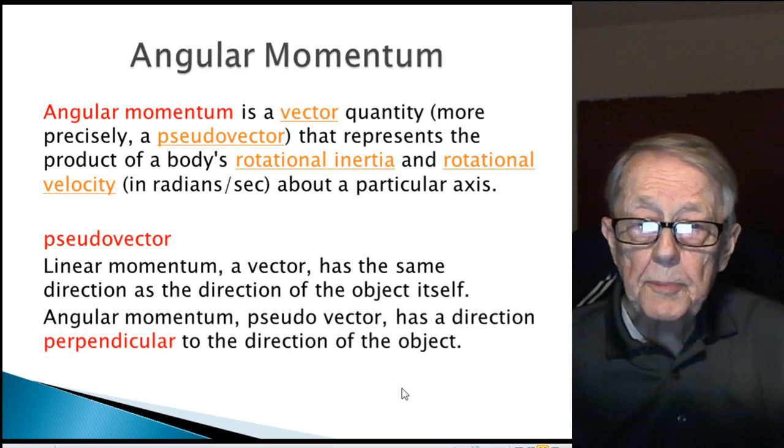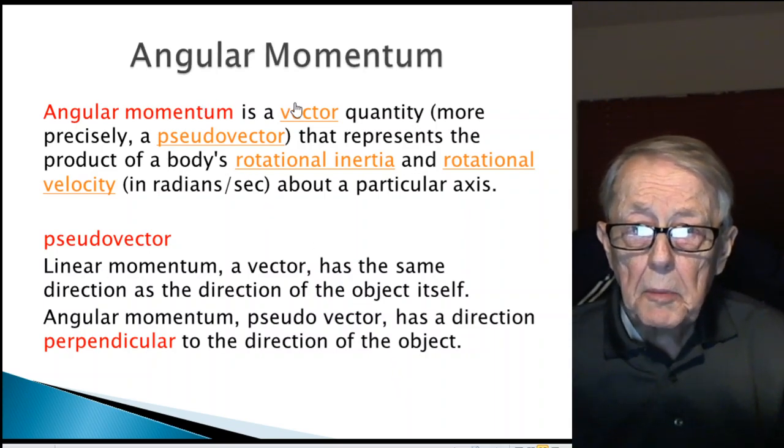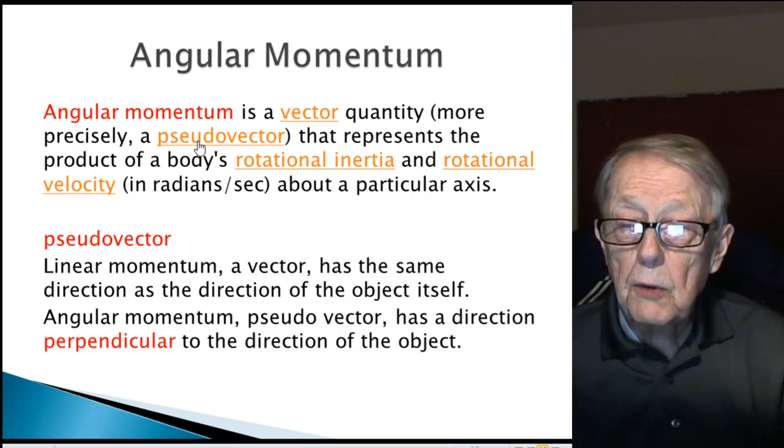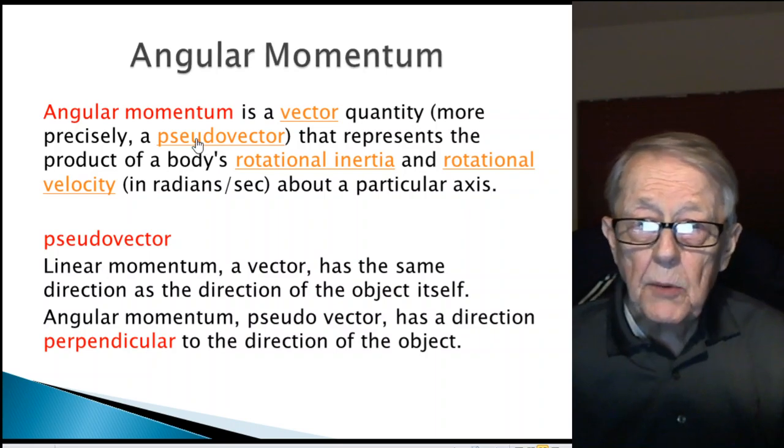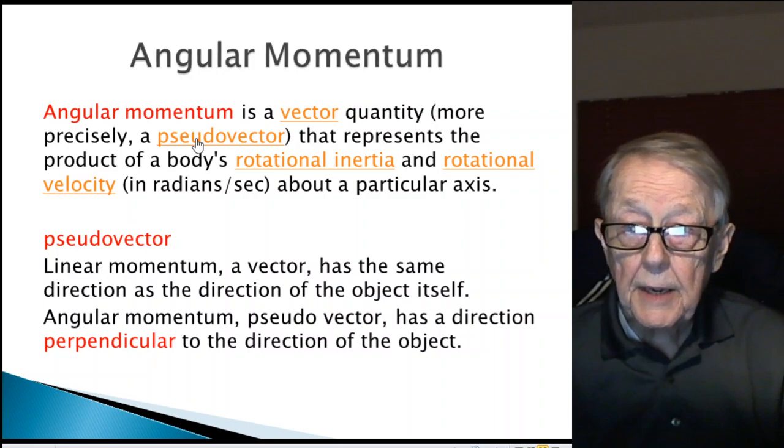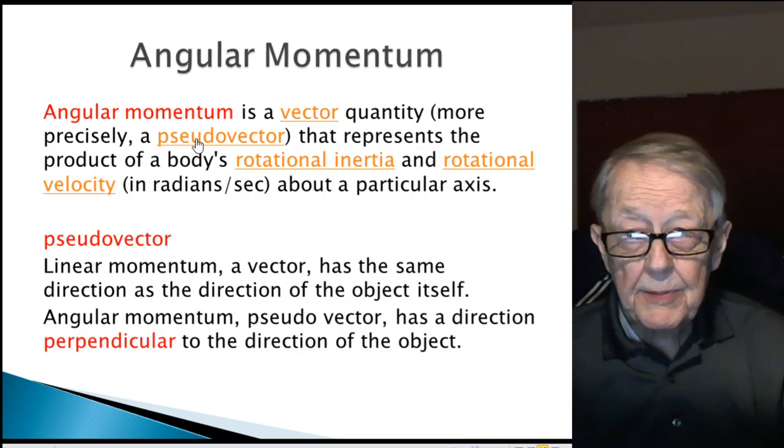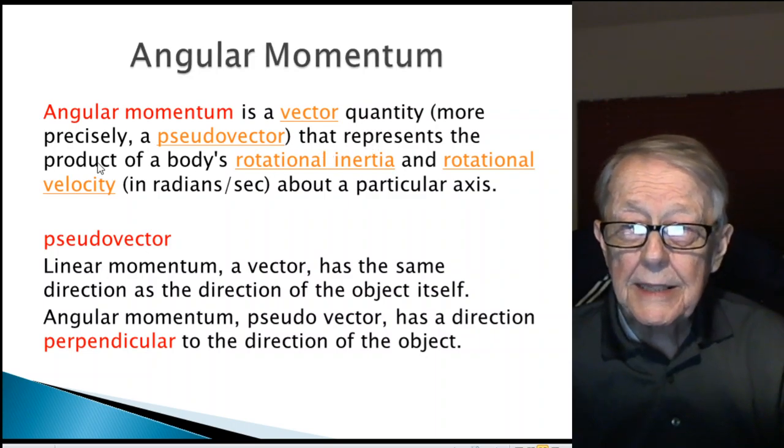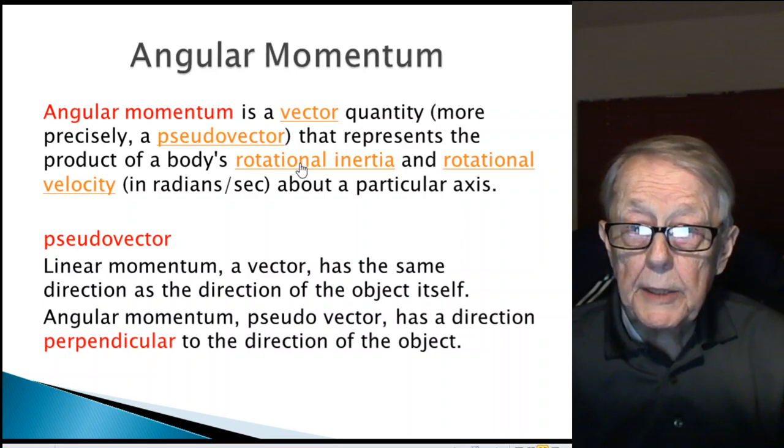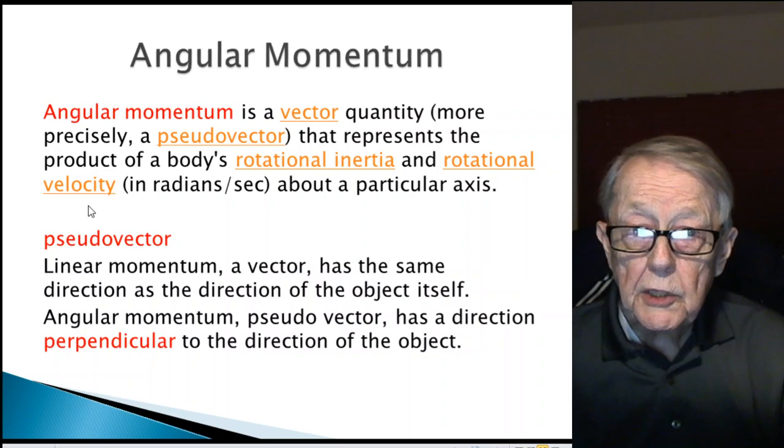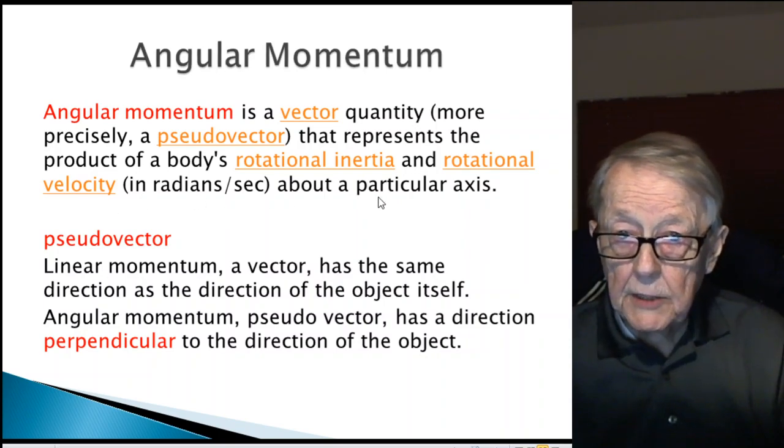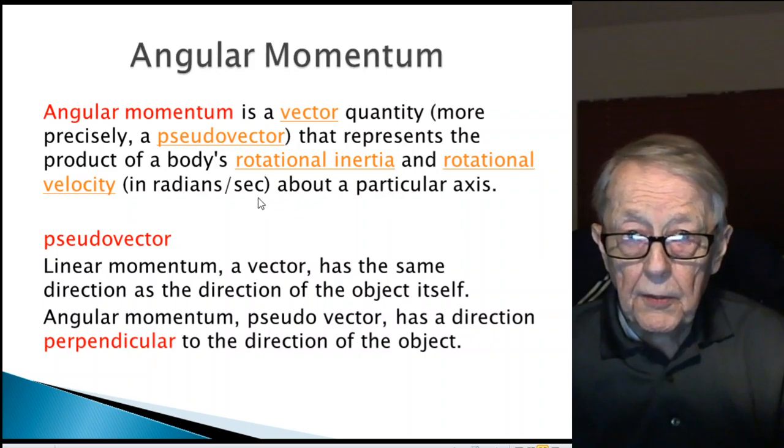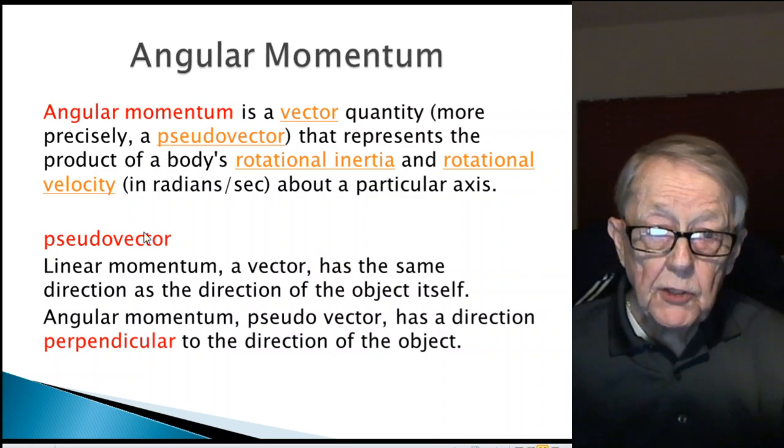So I looked up angular momentum, and this is from Wikipedia. Angular momentum is a vector quantity, more precisely a pseudo-vector. When you see anything with the prefix pseudo on it, that's a red flag to me. I said, whoa, wait a minute, somebody's trying to pull something over on me. They claim it's a pseudo-vector that represents the product, meaning this is a mathematical product of a body's rotational inertia and rotational velocity, which is in radians per second, around its axis.